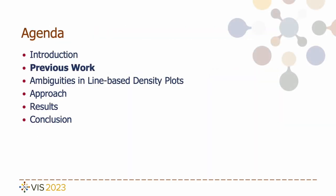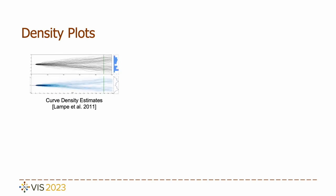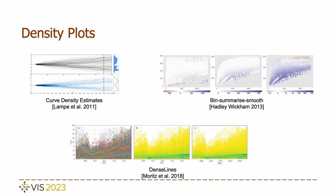Now I will introduce related work. Some works have been devoted to presenting data in terms of density, including line data. For example, Lamp et al. extends kernel density estimation to curves, allowing the calculation of densities for line data. Hadley Wickham introduced a paradigm for visualizing large datasets called Bean Summarized Mode, which streamlines the process of creating density plots. Building upon this, Moliz et al. applied the same paradigm to line data, leveraging GPU acceleration for rendering line-based density plots. These works provide the basis for our construction of line-based density plots.